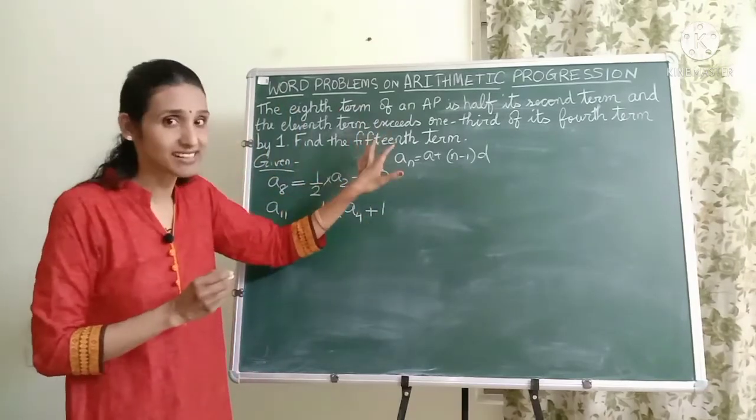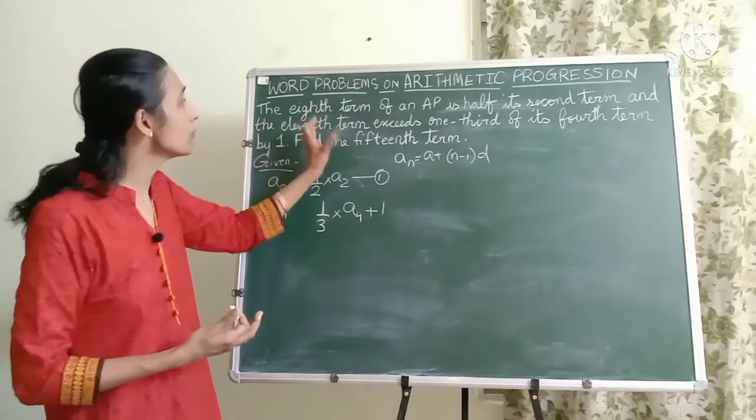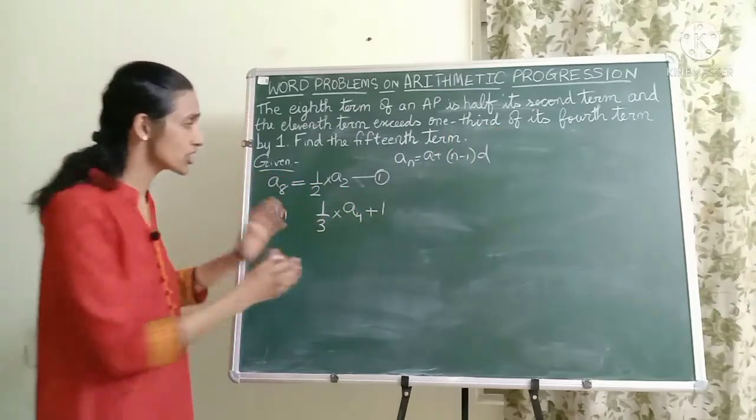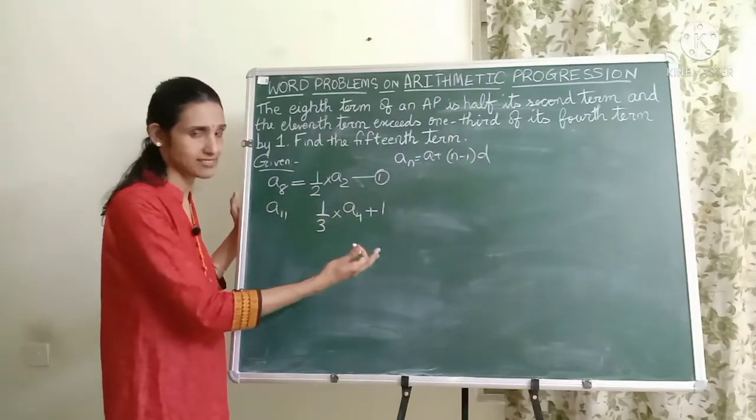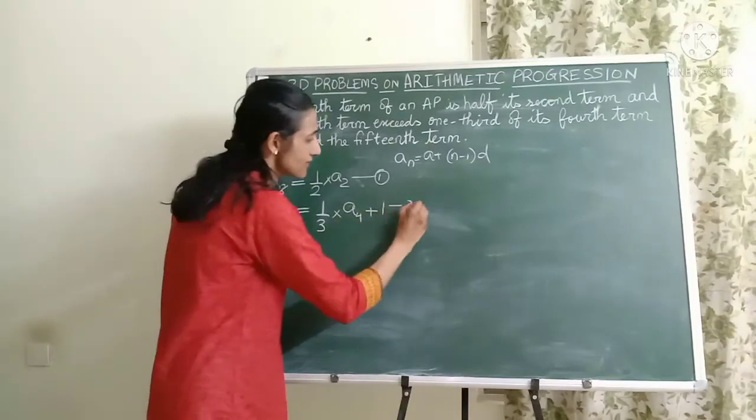So it will be plus one. Wherever you have exceeds, you should say more than. So the 11th term is more than one third of its fourth term by one. Just add one on the right hand side and put an equal to sign like this. So this is my second equation.